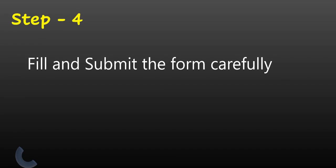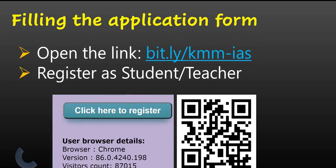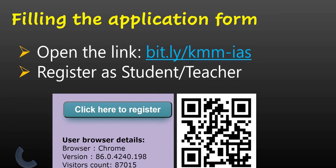And in the fourth step, I will tell you how to fill and submit your form carefully. This is the link bit.ly/kmmias. If you click on this link, application form will be loaded. In the bottom part of the application, you can find click here to register. You have to click on here. You can also launch the application form by scanning this QR code.